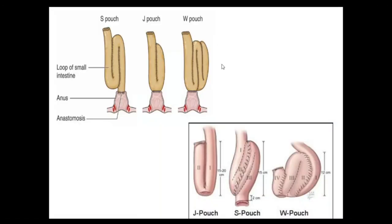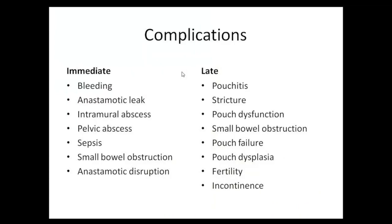The W-pouch is more bulky providing better capacity and control, but overall pouch-related complications are similar to the J-pouch. The W-pouch has multiple anastomoses, so even a minor leak can cause pouch loss. Complications of pouch surgery include immediate post-op: bleeding, anastomotic leak, intramural abscess, pelvic abscess, pelvic sepsis, systemic sepsis, small bowel obstruction, adhesive and anastomotic disruption, and pouchitis. Late complications include pouchitis, stricture formation, pouch dysfunction, small bowel obstruction, pouch failure, pouch dysplasia, infertility, and incontinence.